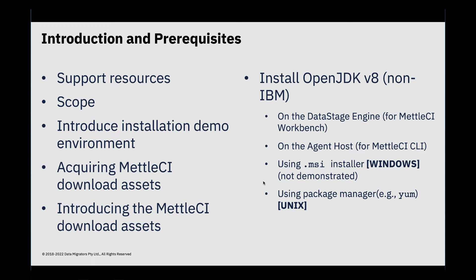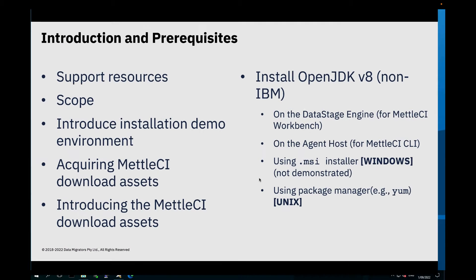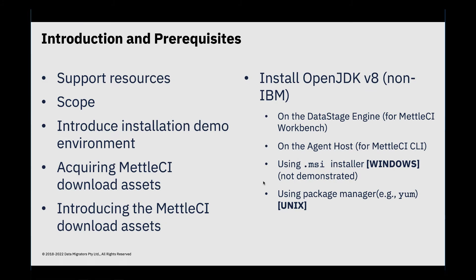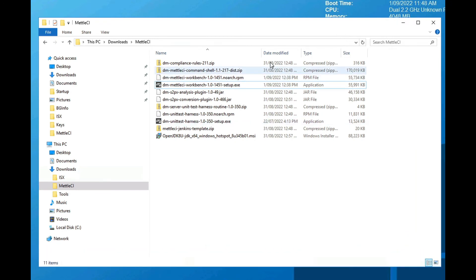Then the actual latest version of Metal CI will probably be on Fix Central. At the time of recording this — which is the 1st of September 2022 — the latest software is in the S2PX package, which is the server-to-parallel conversion utility on Fix Central. I should also mention that I won't be covering the server-to-parallel conversion utility as part of this sequence of videos; that will be covered in some other videos. So Metal CI 1.0 contains your license file, which you will need. Download that and then get the latest version of the software from Fix Central. What I'll do now is quickly introduce you to the assets that I've downloaded onto this environment and walk through them.